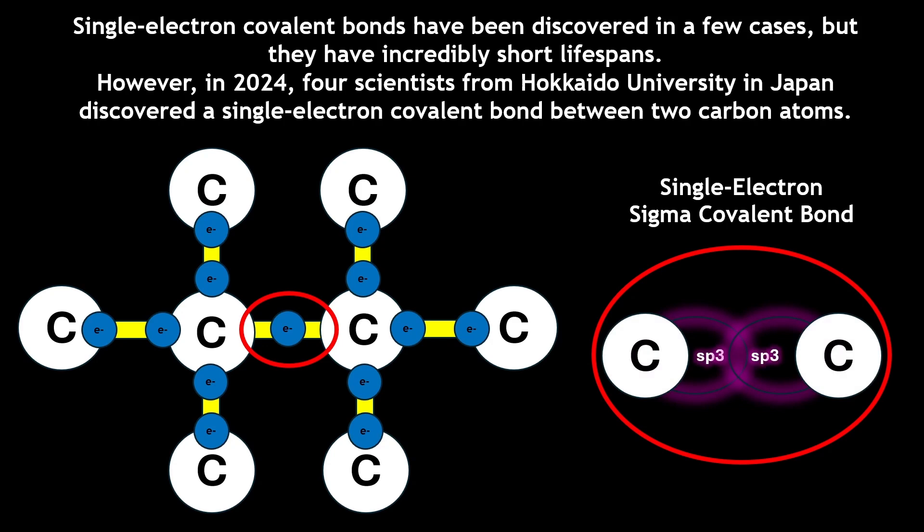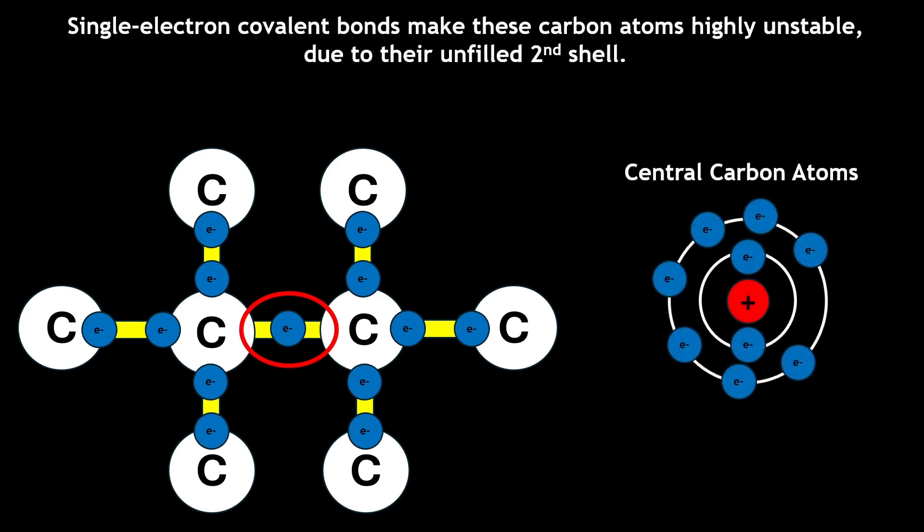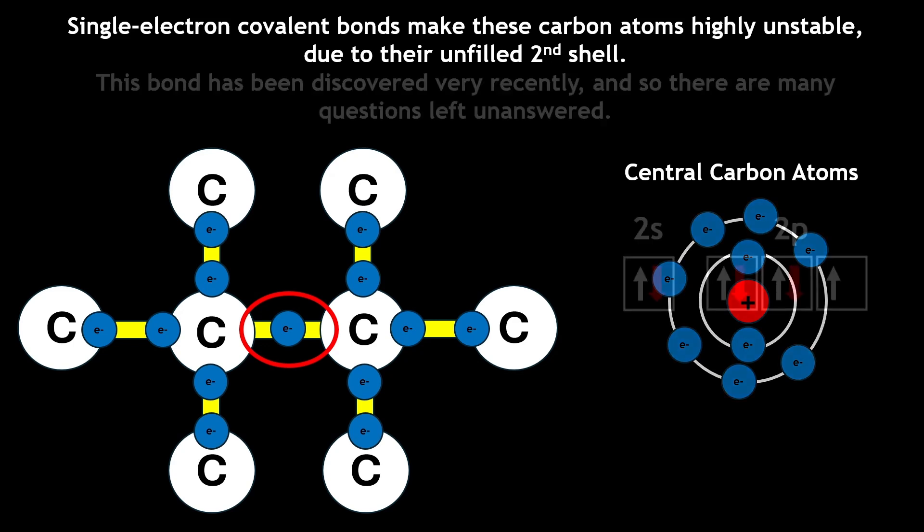The discovery of this bond has completely changed our view of how electrons are transferred, and may call for a change to how we define the octet rule. For example, it is important to realize that single electron covalent bonds make these carbon atoms highly unstable, due to their unfilled second electron shell.